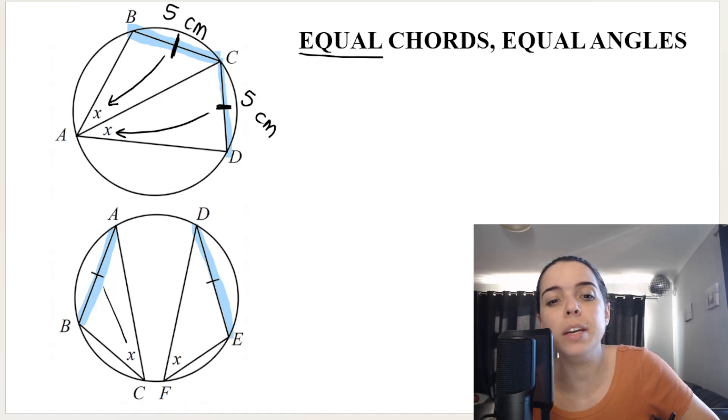So the angle opposite AB is X. The angle opposite DE is also X. They're equal in size.